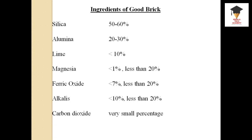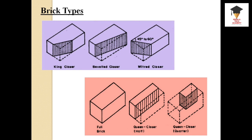Next, the types of bricks. The main one is Queen Closer - the brick cut longitudinally through the middle portion. Next is beveled closer - cut breadth-wise, half the length with the full height cut at a bevel on one end. Mitred closer is where one corner is cut at 45 to 60 degrees.